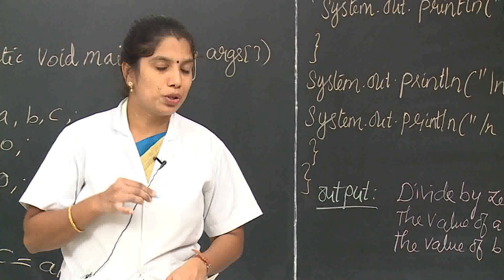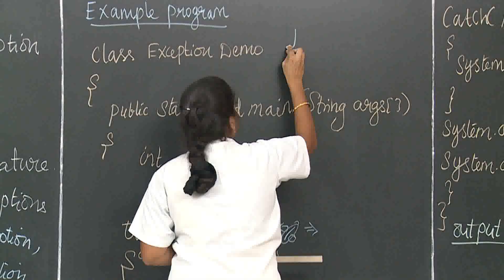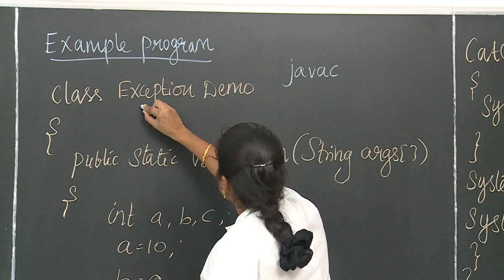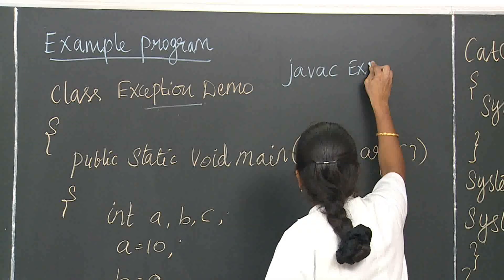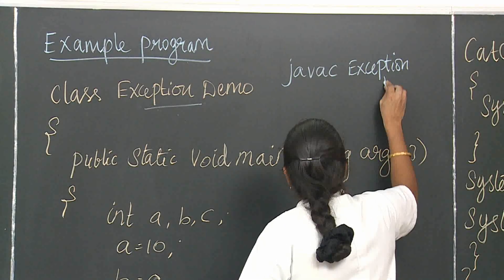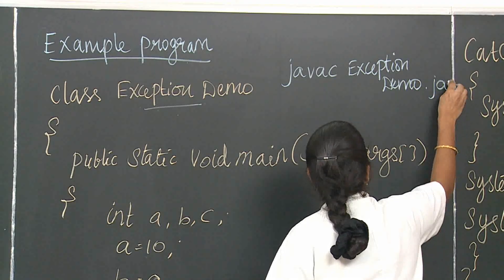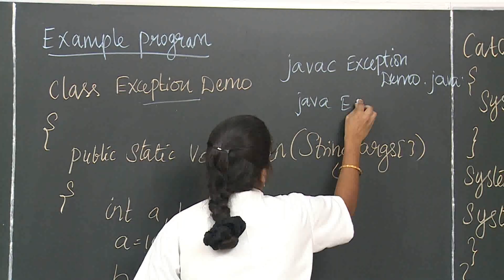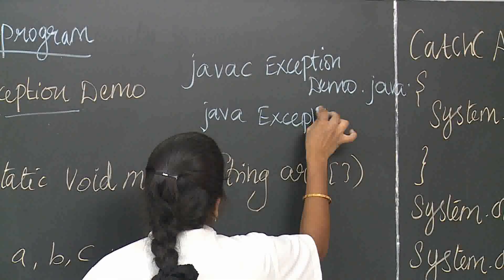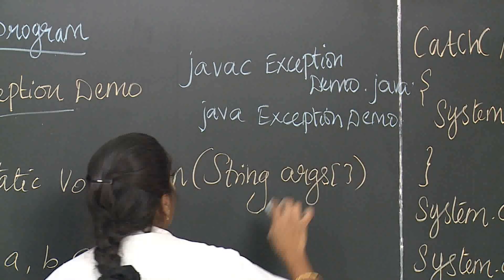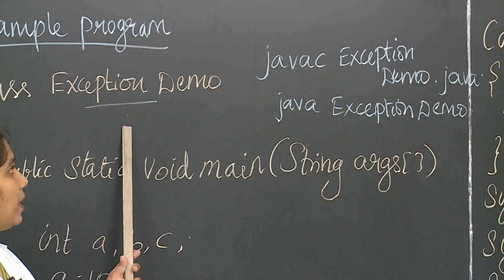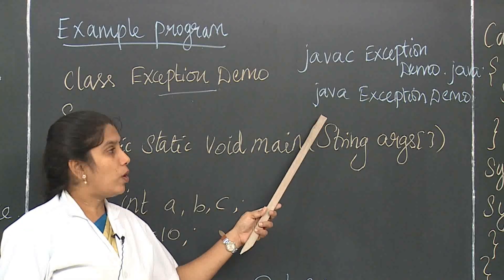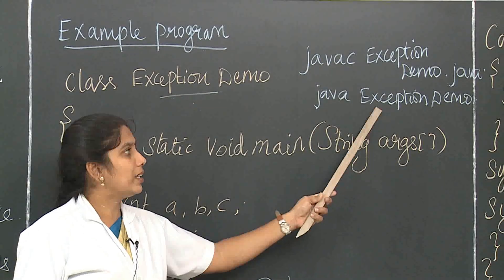To compile any Java program, write 'javac ClassName.java'. While running the program, write 'java ClassName'. This applies to all programs: javac is for compiling and java is for executing the program.